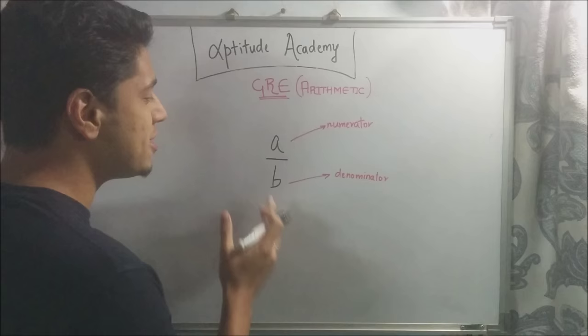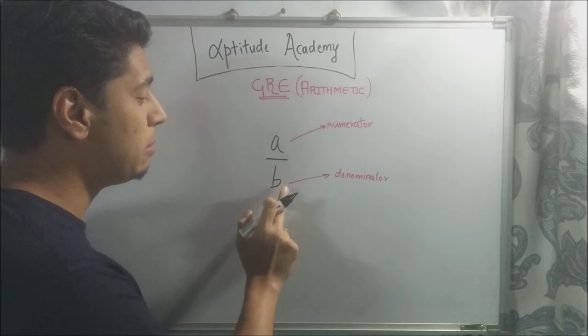Fractions are numbers of the form A over B. The number on top, A, is known as the numerator and the number below is known as the denominator.